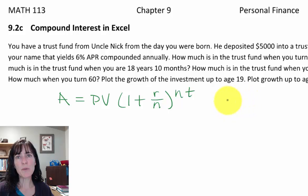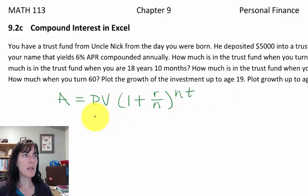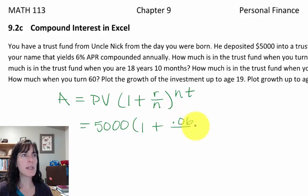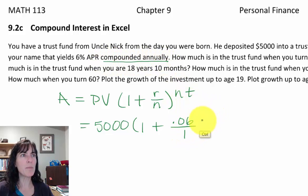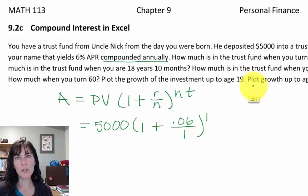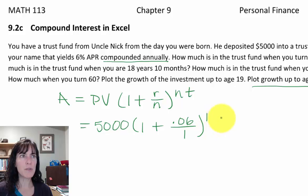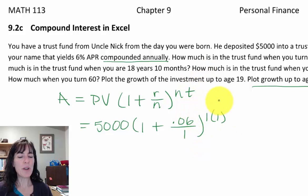We're going to use the formula A = PV × (1 + R/N)^(N×t), and I've listed out those variables. I want to plug them in: 5,000 times (1 + 0.06), with N = 1 because it's compounded annually, so the exponent is also 1. I want to evaluate this at a bunch of different years — especially since I need to plot the growth.